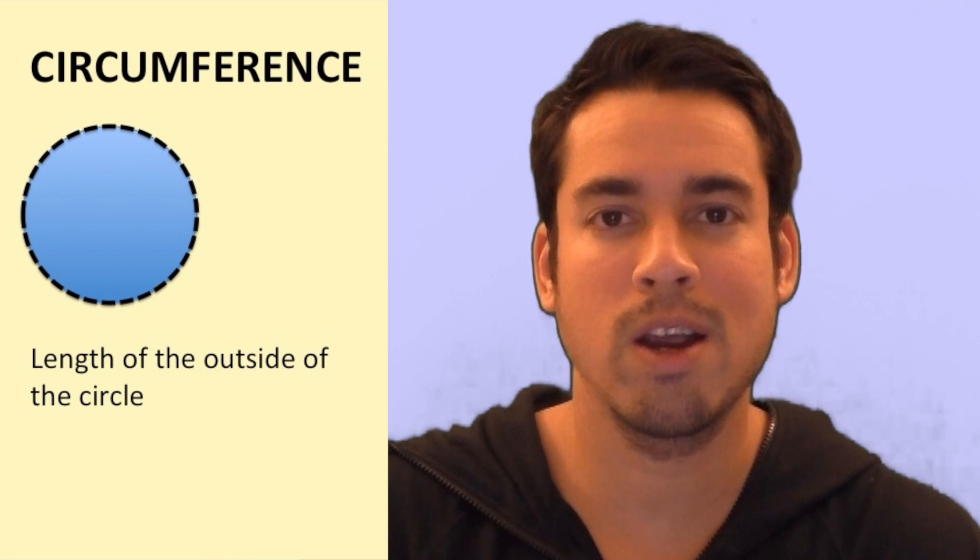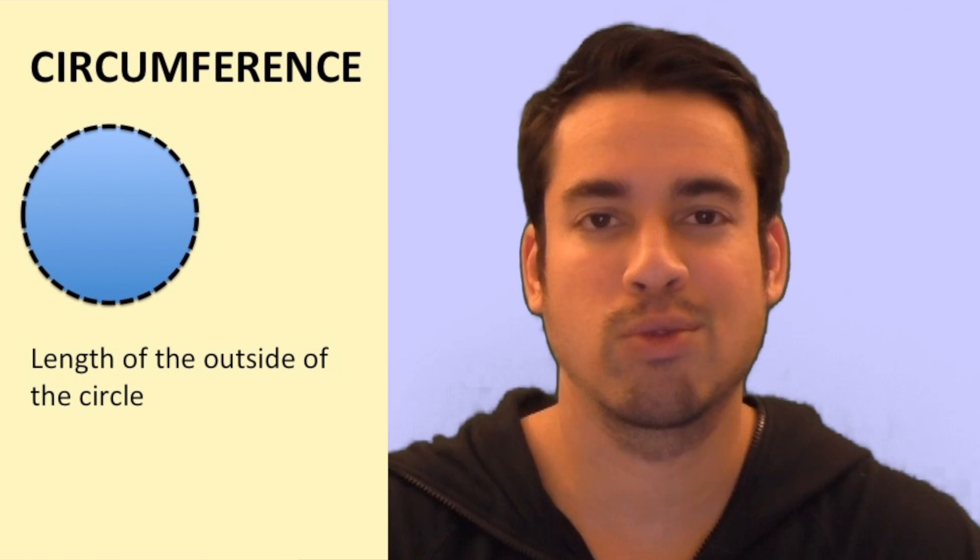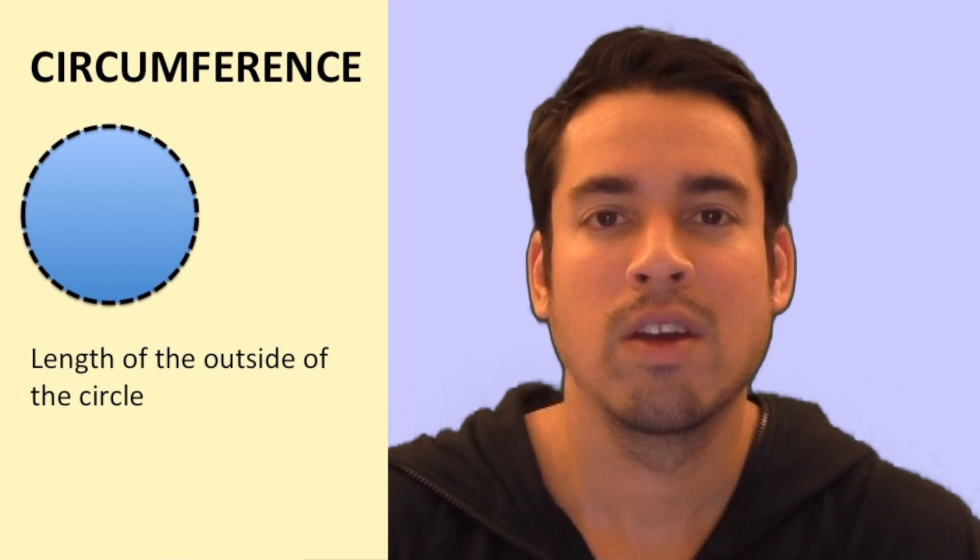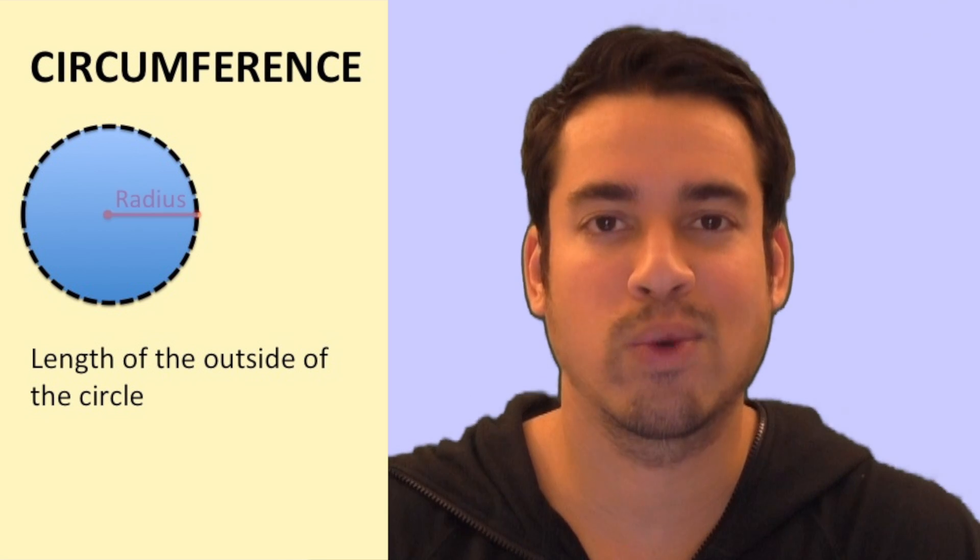So just like if you had a square and you wanted to know the perimeter, you just add up all the side lengths. Well, it's not so easy with a circle, but in order to calculate the circumference, you're going to need that radius value.